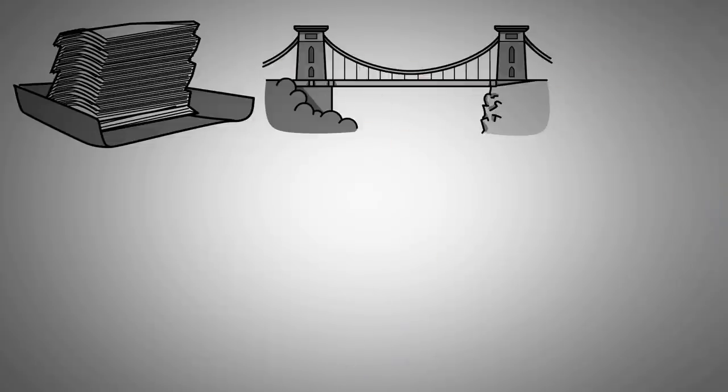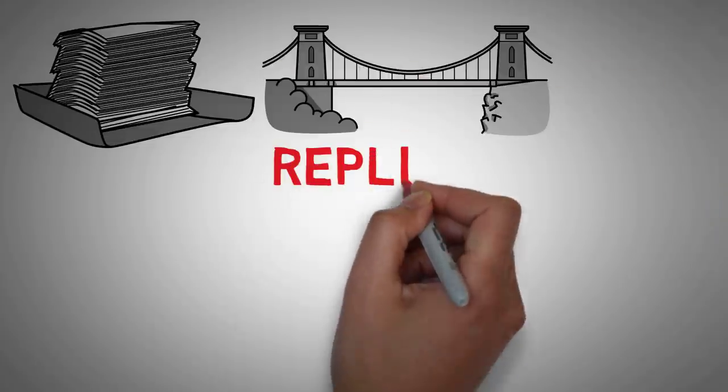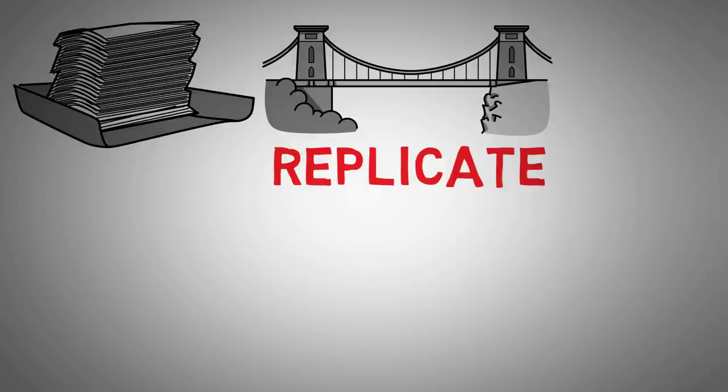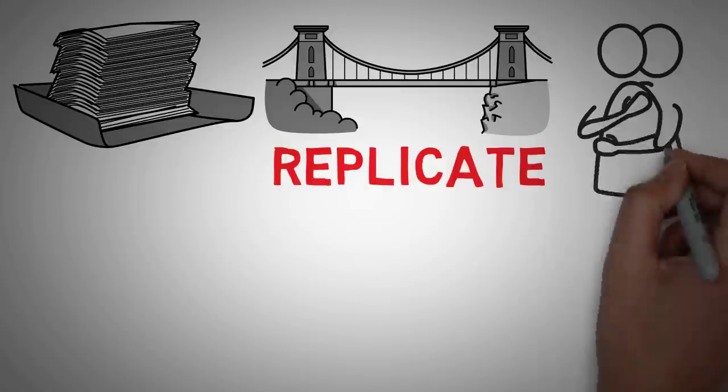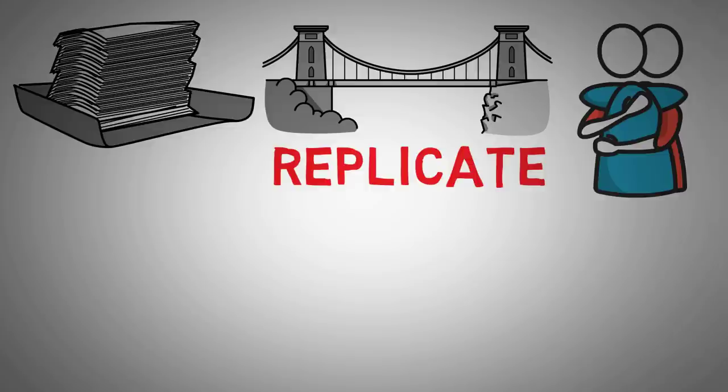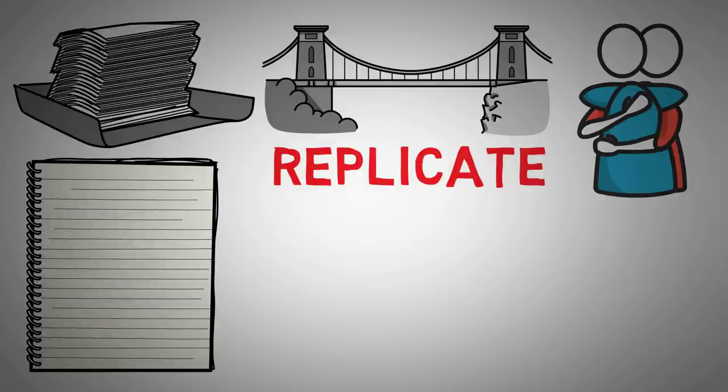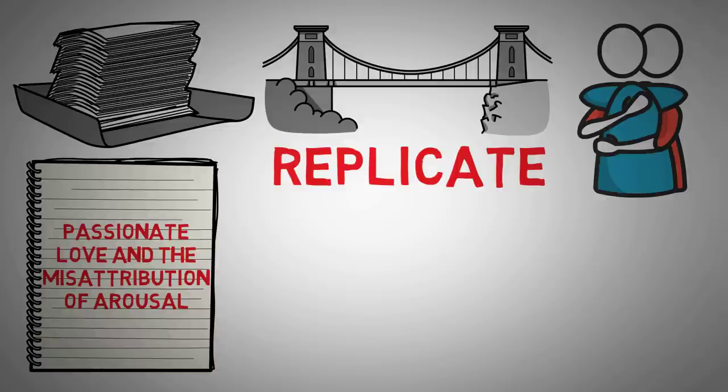And there's a few other experiments. But you should know it also goes both ways. A few other experiments aimed to replicate the findings of the bridge experiments in 1974. And one in particular expanded on the idea of how misattribution affects attraction. In 1981, researchers published Passionate Love and the Misattribution of Arousal. It's quite a study name.